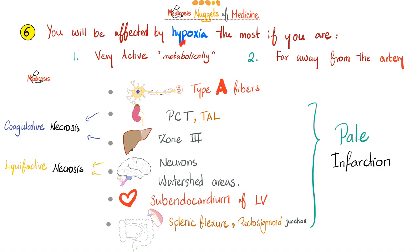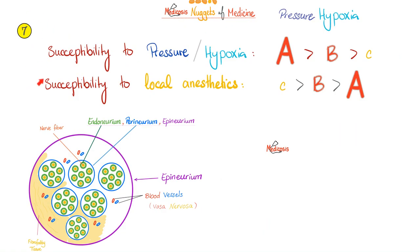Pain fibers tend to be of the C type. Nugget number six: You'll be affected by hypoxia and pressure hypoxia the most if you are very metabolically active and far away from the artery. Type A is a classic example—it's very active metabolically speaking and far from the vasa nervosa. Nugget number seven: Let's put these facts together. Who is more susceptible to local anesthetics? C, then B, then A. How about pressure or hypoxia? A, then B, then C.